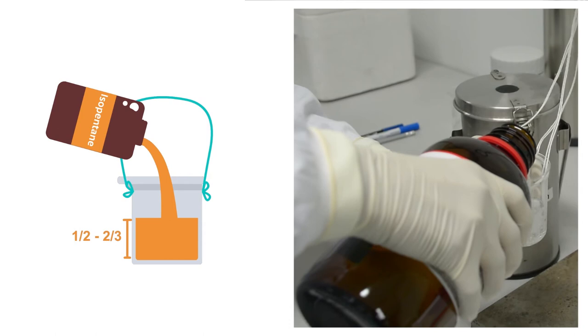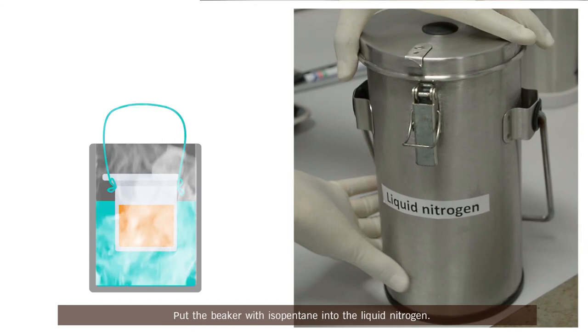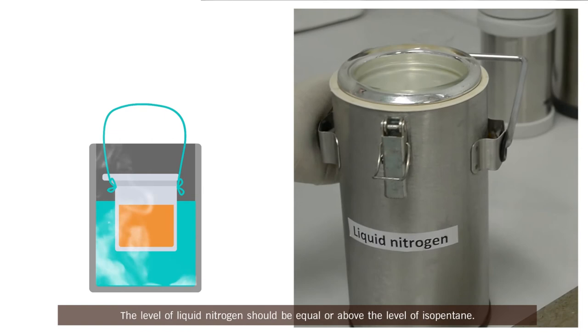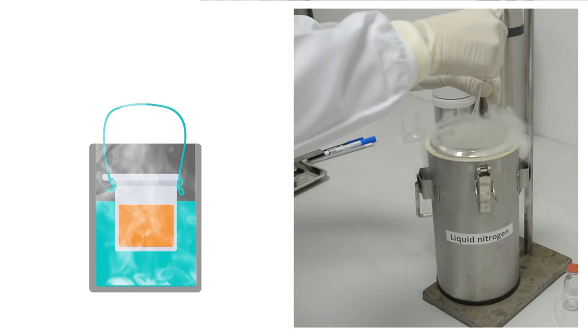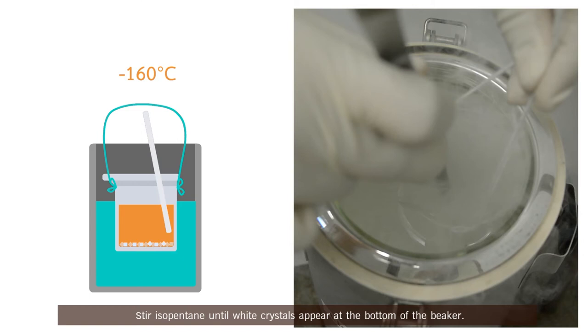Put the beaker with isopentane into the liquid nitrogen. The level of liquid nitrogen should be equal or above the level of isopentane. Do not let liquid nitrogen mix into isopentane. Stir isopentane until the crystals appear at the bottom of the beaker. Now the isopentane temperature is ready for freeze fixation at minus 160 degrees Celsius.